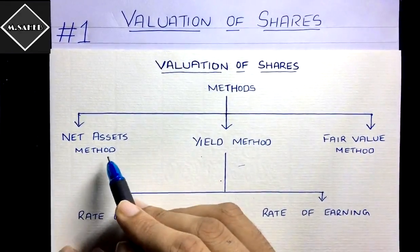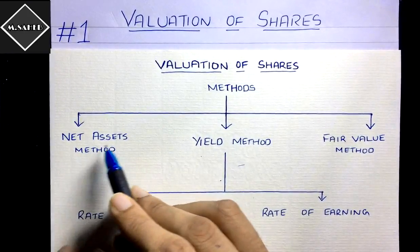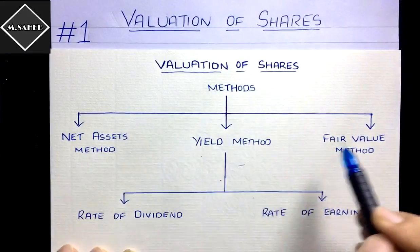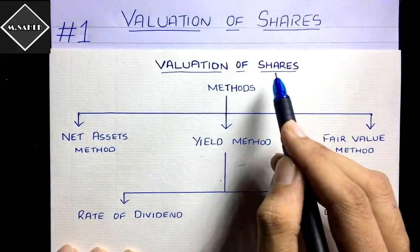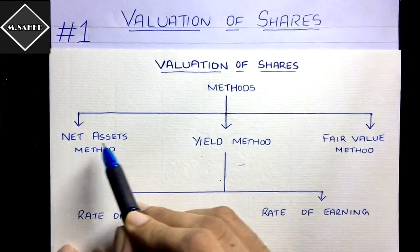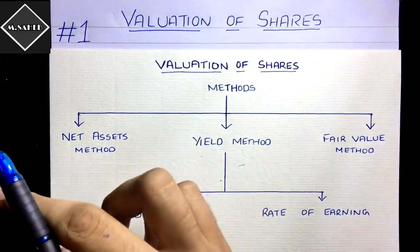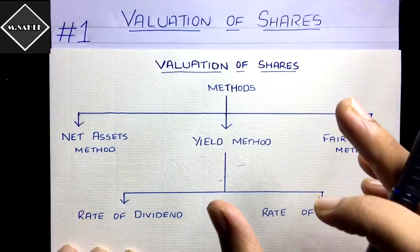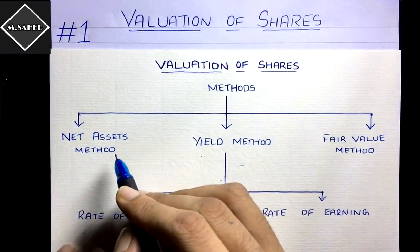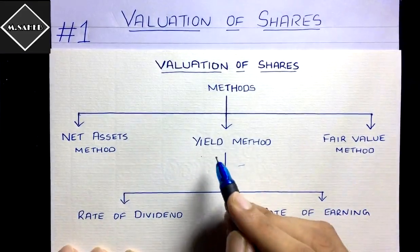The first is the Net Assets Method, which is based on the asset approach. Here we calculate the net assets available for equity shareholders — because we are calculating the value of equity shares, we concentrate on equity shareholders. We divide the net assets available for equity shareholders by the number of shares. You'll learn how to calculate net assets in the next video.